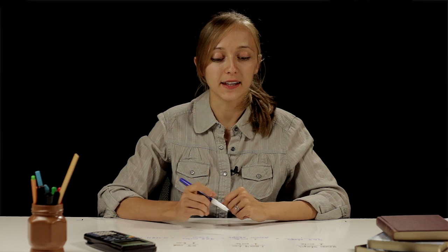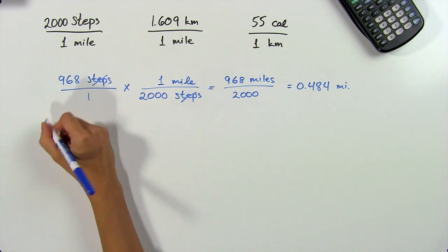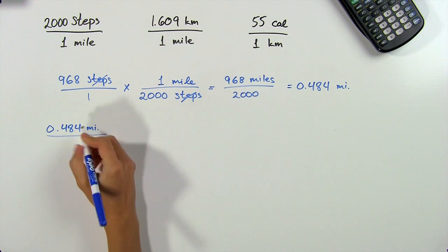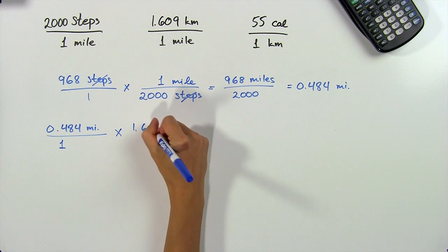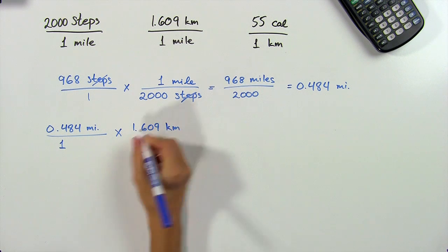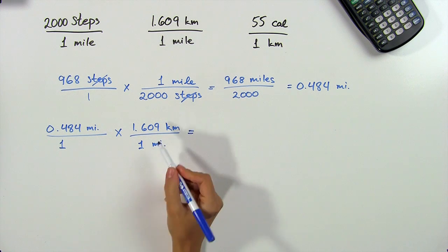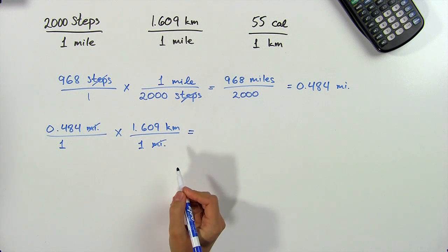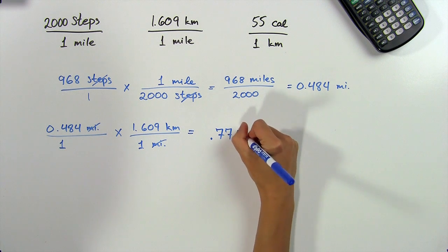Our next step is to convert the miles to kilometers. We do the same thing using our next conversion factor, multiplying 0.484 miles by our conversion factor, which is 1.609 kilometers over 1 mile. We make sure that the miles are in the opposite diagonal so that they cancel out. When we multiply across, we get 0.779 kilometers.